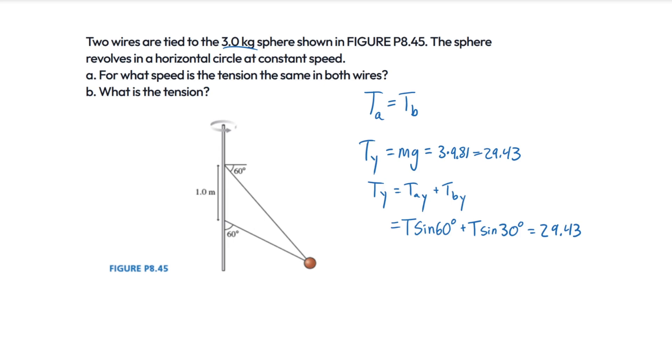So let's just go ahead and solve this for T. Now, I'm using T here because usually this would be T sub a and T sub b, but they're equal to each other, so I'm just going to call it T. So sine of 60 degrees is the square root of 3 over 2, and sine of 30 degrees is just 1 half, and that is equal to 29.43. If we solve that, we're going to get T is roughly 21.54 newtons. And with correct significant figures, our answer for B will be 22 newtons. So that is B.